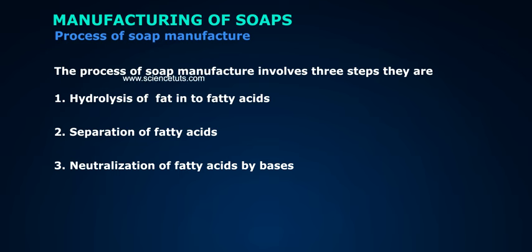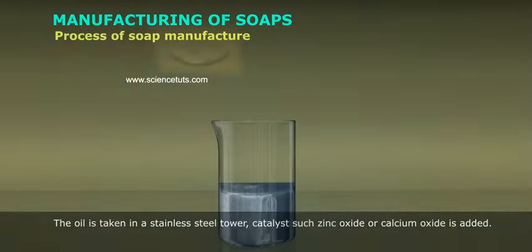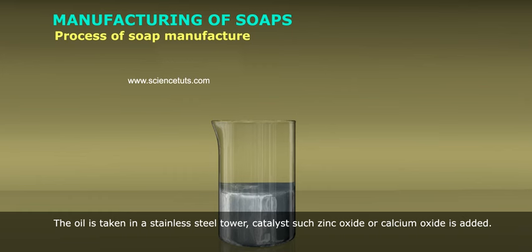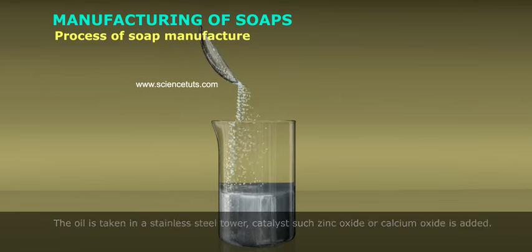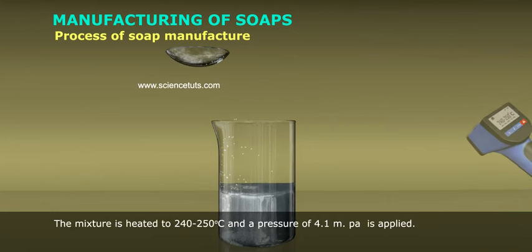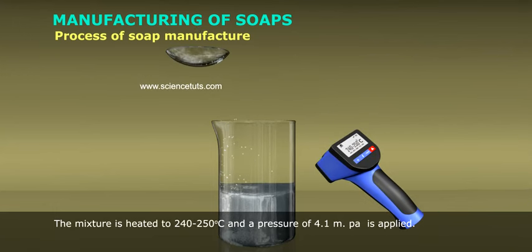The oil is taken in a stainless steel tower; catalyst such as zinc oxide or calcium oxide is added. The mixture is heated to 240 to 250 degrees Celsius and a pressure of 4.1 megapascal is supplied.